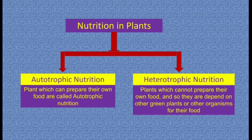Children, what is photosynthesis? You have learnt in the previous session — just recollect. Plants can prepare their own food in the presence of sunlight and chlorophyll using water, minerals, and carbon dioxide. This process is called photosynthesis.